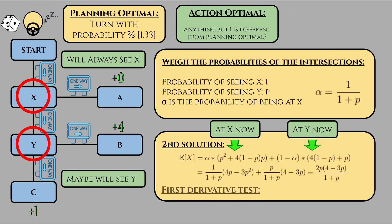Using the first derivative test, we set 14 over P plus 1 squared minus 6 equals 0. So our optimal value is square root of 7 over 3 minus 1, which is about 0.52. In this formulation, using P equals 0.52 gets an expected value of around 1.67.